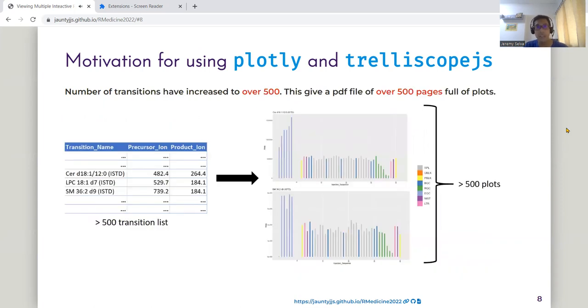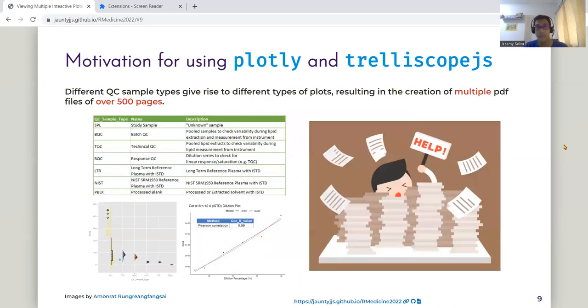In addition, the number of transitions have increased to over 500. This gives a PDF file of over 500 pages full of plots. Lastly, to improve the quality of our data, we have different QC sample types as well. And this gives rise to new plots such as the rain cloud plot and the dilution series plot.